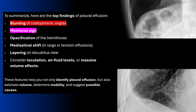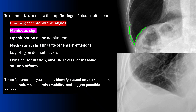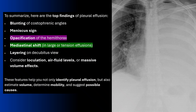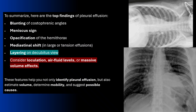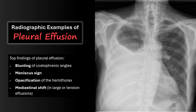To summarize, the top findings of pleural effusion are: first, blunting of the costophrenic angle; second, the meniscus sign with lateral tracking of fluid up the chest wall; third, opacification of the hemithorax with mediastinal shift away in large effusions; and fourth, layering on the lateral decubitus view. Don't forget the pitfalls — loculations that look like tumors, air-fluid levels, and massive volume effects. These features help identify the effusion, estimate volume, determine mobility, and suggest possible causes.